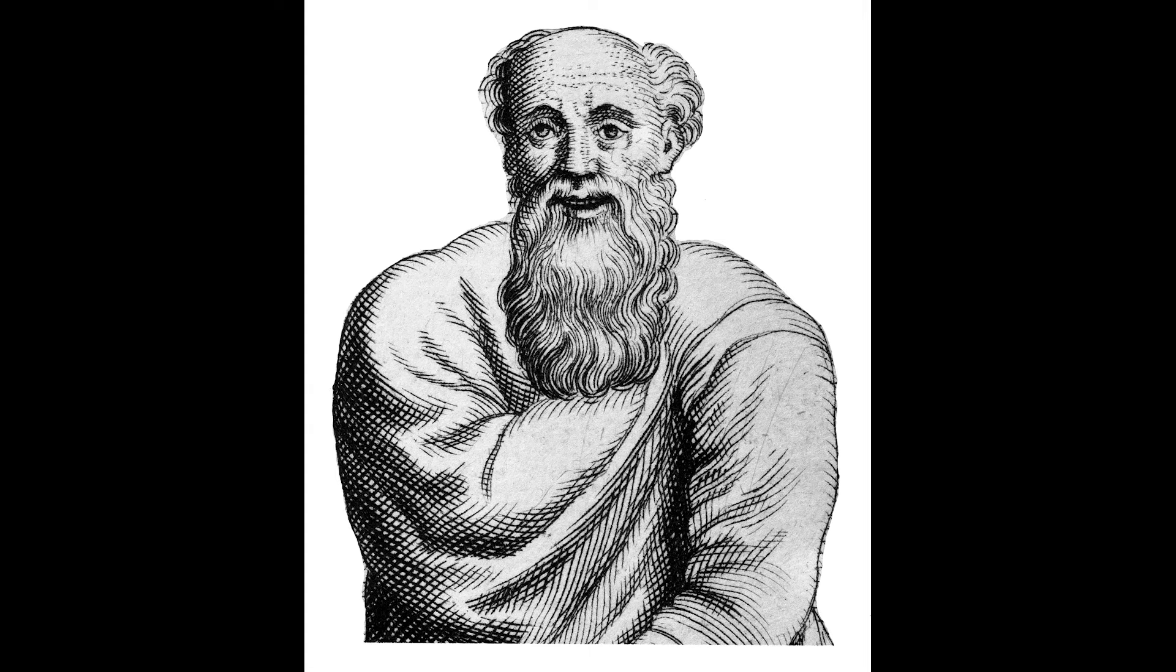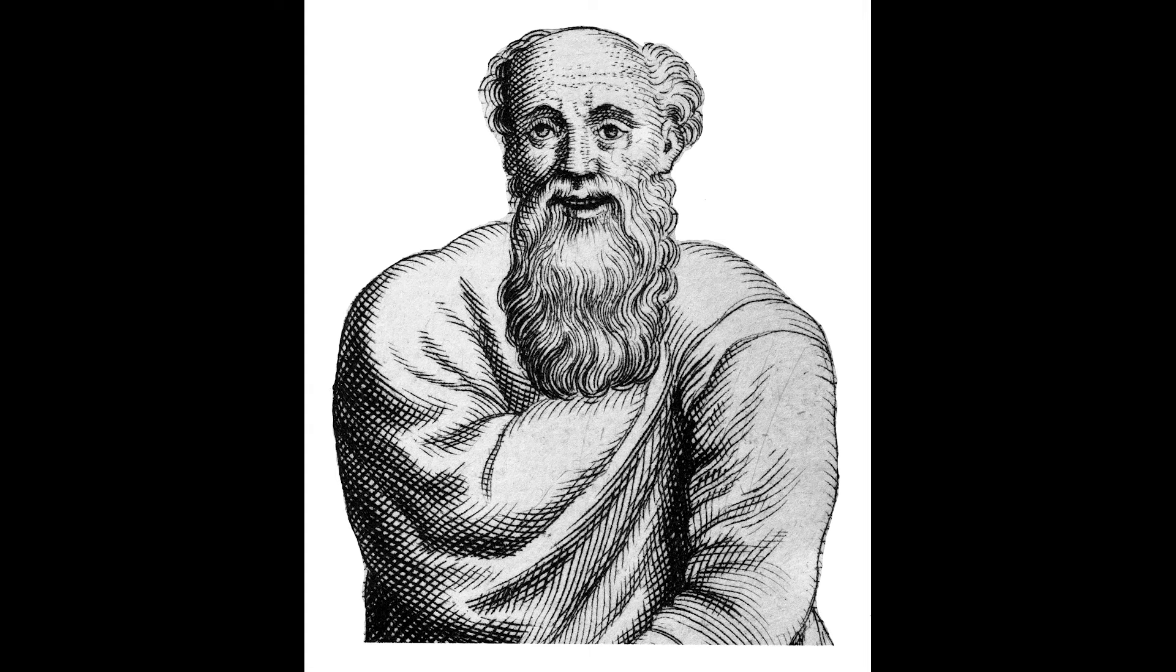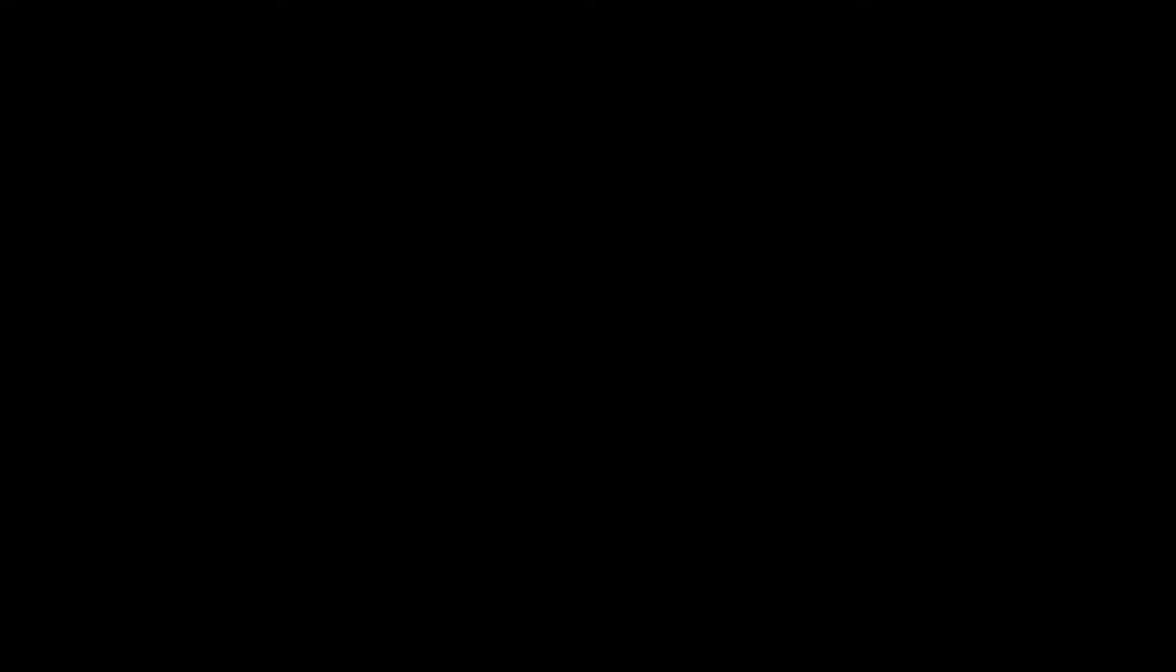Journey back to ancient Greece. Here a philosopher named Democritus pondered over a thought experiment. If you kept cutting an object, at what point would it be so small that it couldn't be cut any further? He believed such a point existed, naming it atomos, uncuttable.